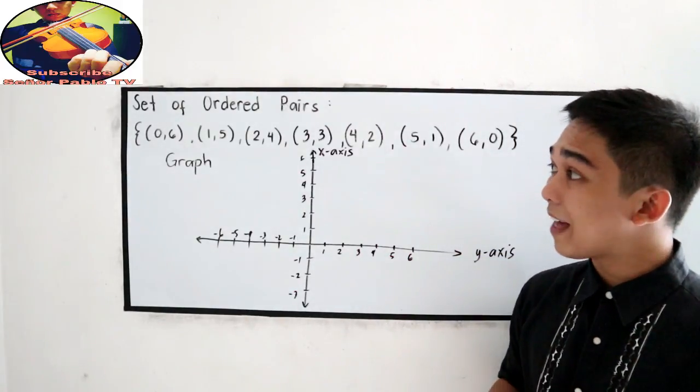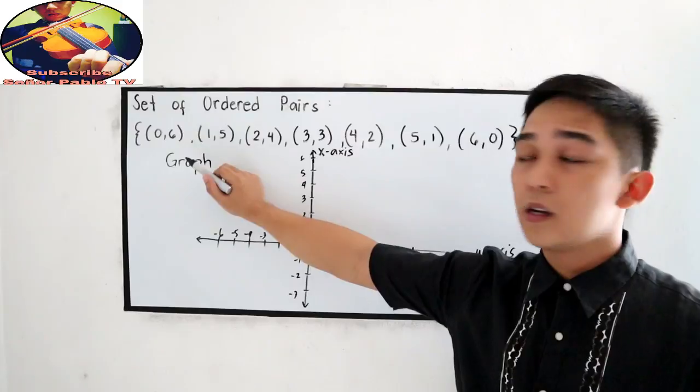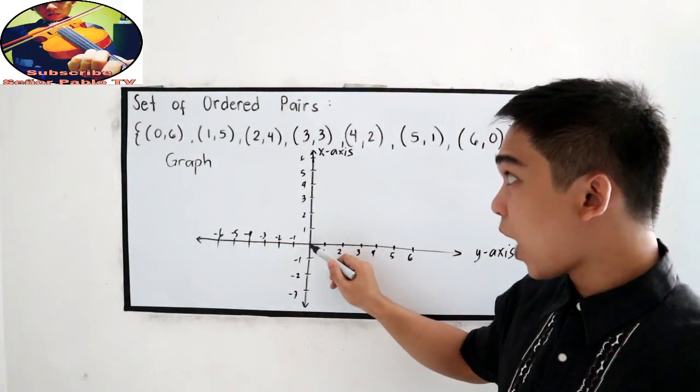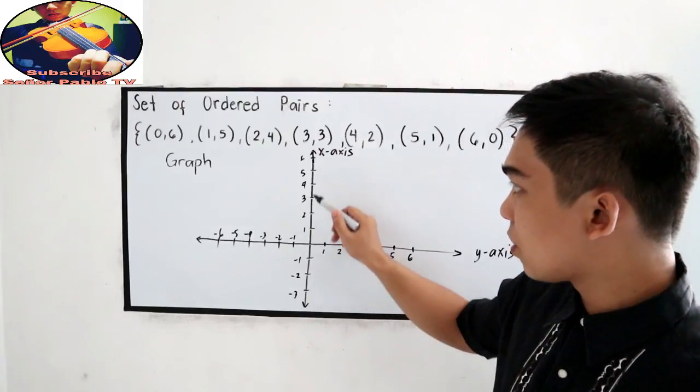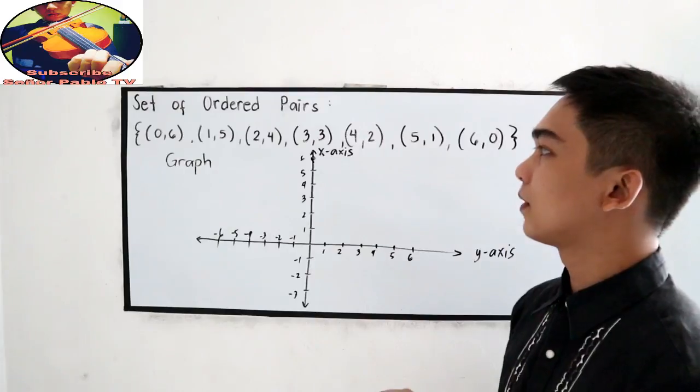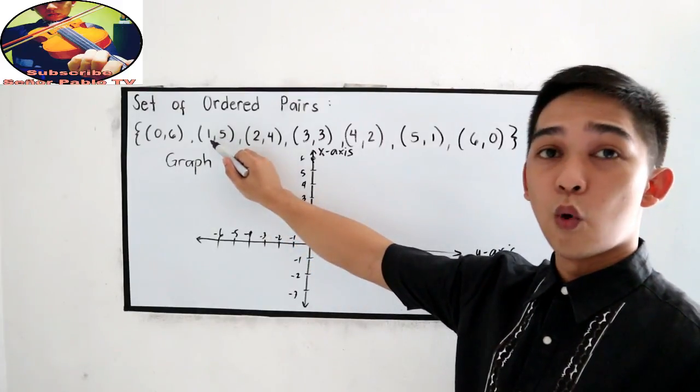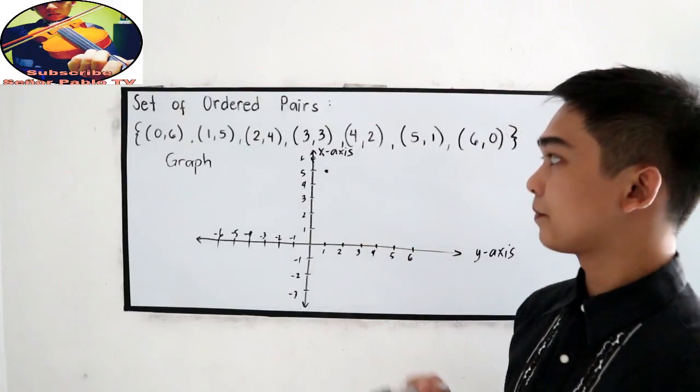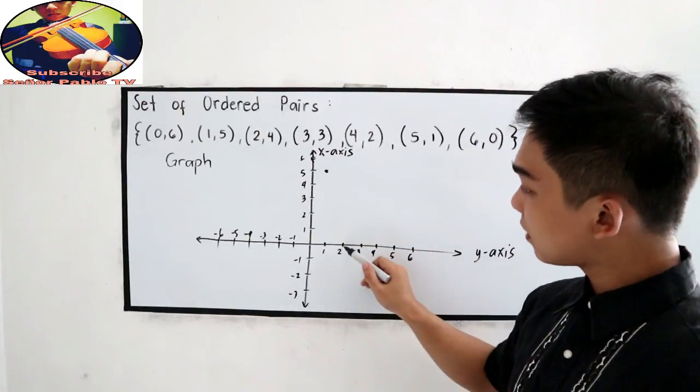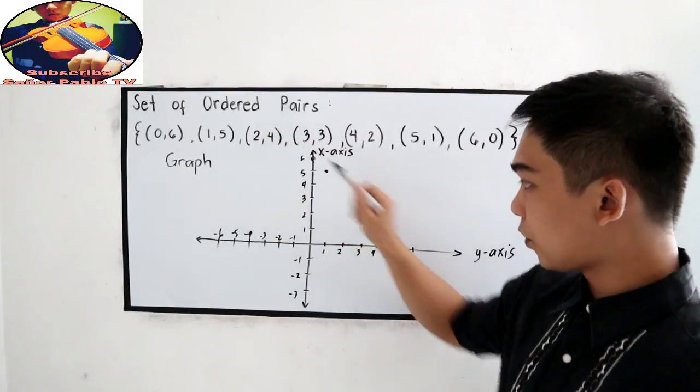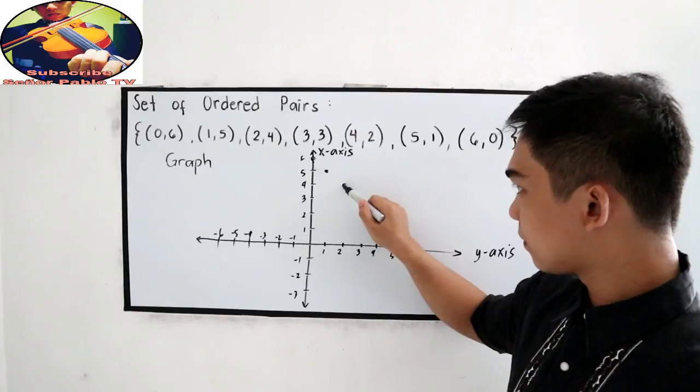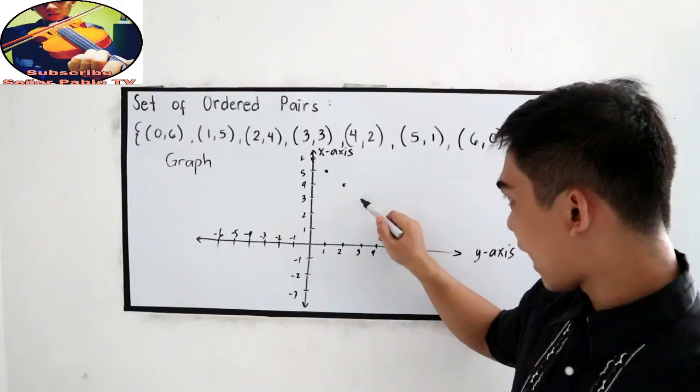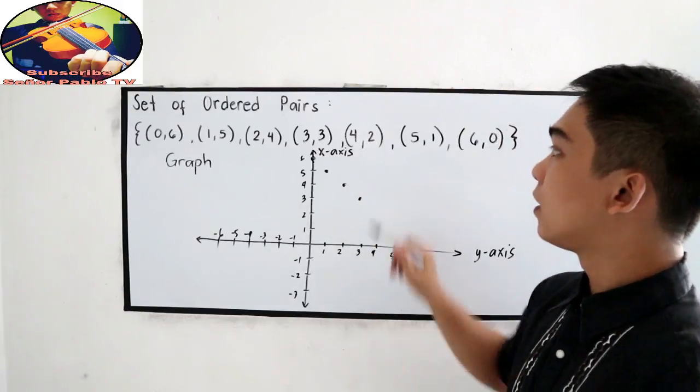This time, we are going to plot the points in our ordered pairs. So, (0,6). X is 0, then Y positive 6. Next, (1,5), 1 going up to 5. Next, (2,4), 2 going to 4. Next, (3,3), 3 going up 3.